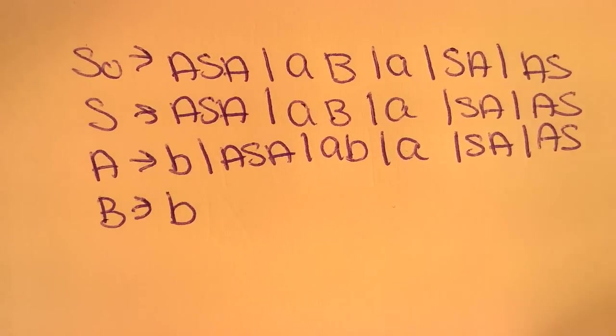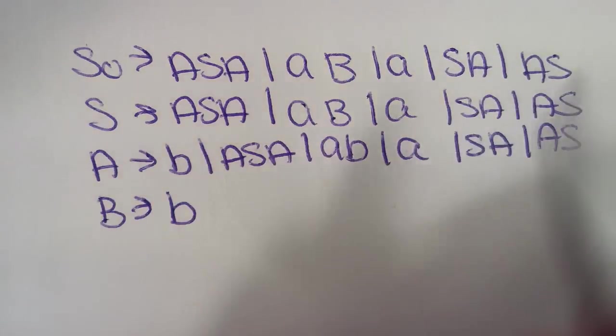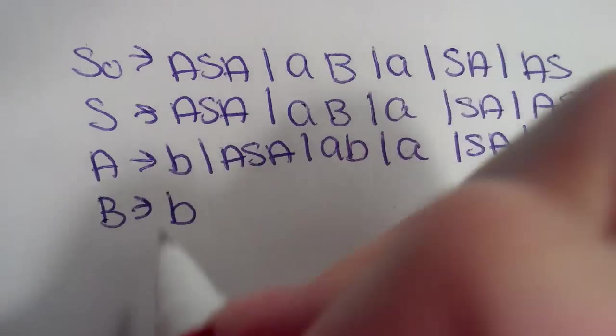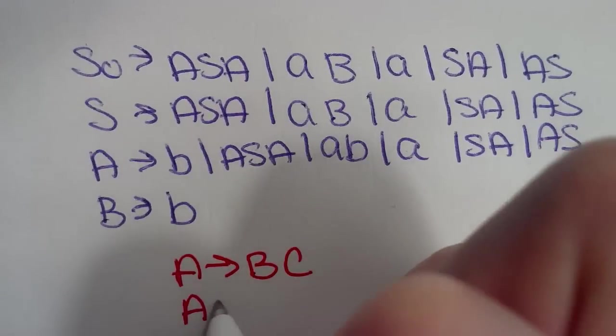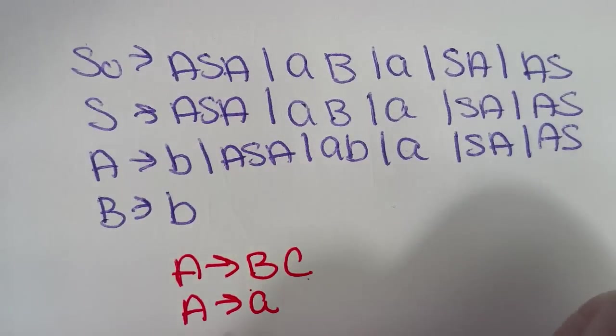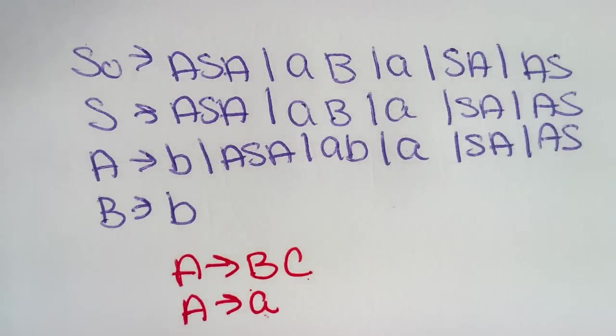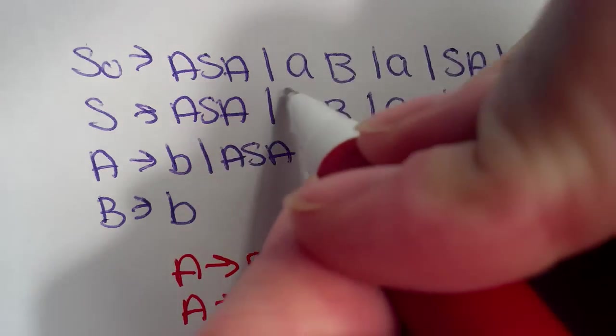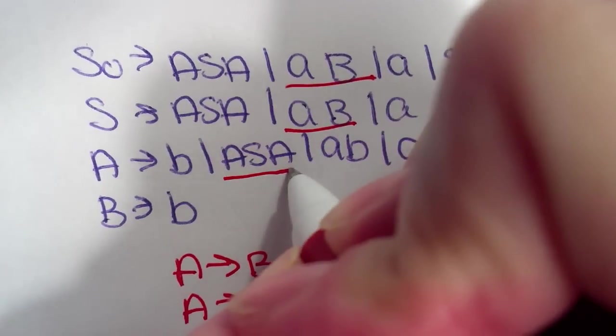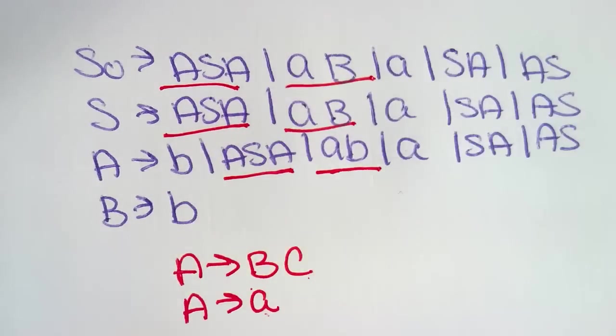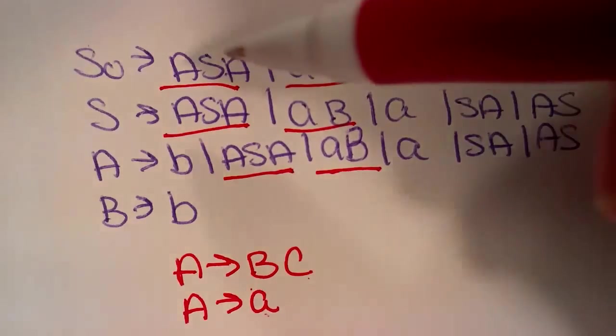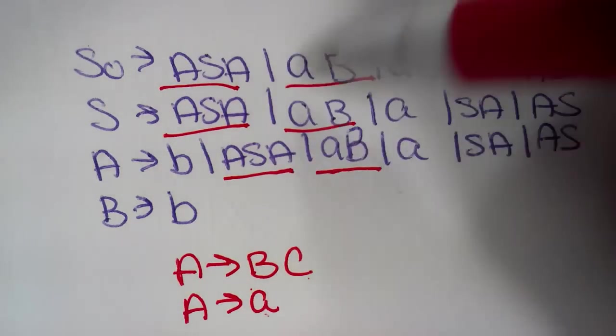Now as a reminder, to be Chomsky normal form, we need to have this grammar in the form of A points to BC or A points to A. Where B and C are our variables and A is our terminal. And there are just a few places where it does not hold. So if you look here, here, here, here, here, and here. That's supposed to be an uppercase B. These are areas where Chomsky normal form does not hold.